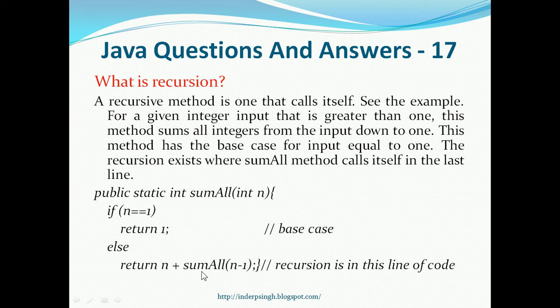There are a couple of items to note here. If n is equal to 1, return 1 — this is the base case, which is where the recursion ends. And since we have the function calling itself, there is recursion in that line of code.